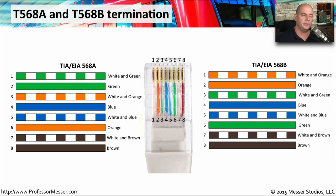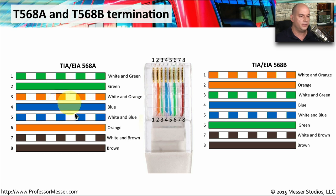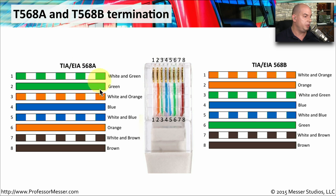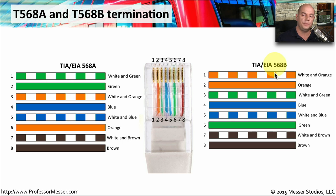Here's the color schemes for the standards. The 568A is on the left side and the 568B on the right side, numbered one through eight — these are the pins on the end of the RJ45 cable. They're very similar; pins four, five, seven, and eight are exactly the same between the two standards. Where they differentiate is pins one, two, three, and six. Pins one and two are white-green and green in the A standard, and orange and white-orange in the B standard — those pins are simply switched with the colors depending on which standard you're looking at.